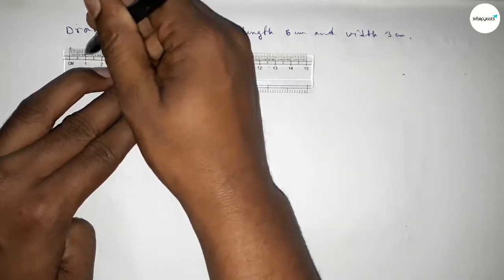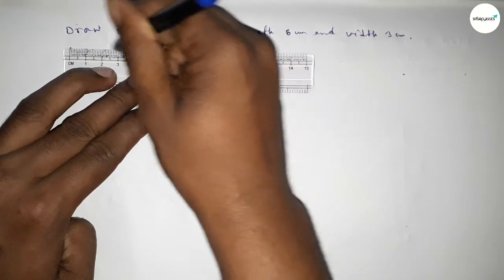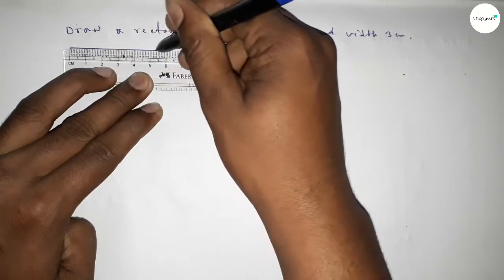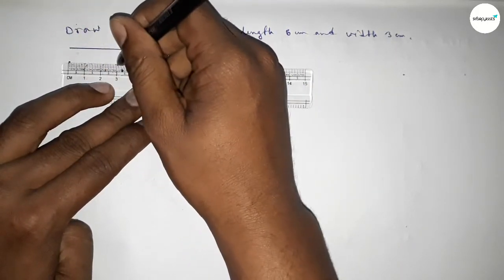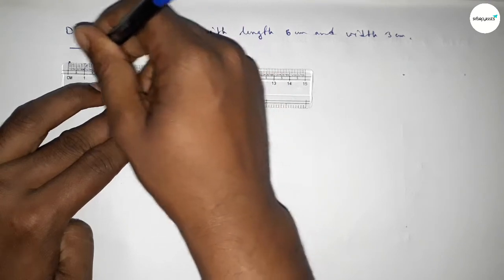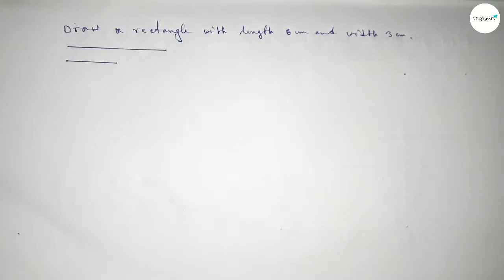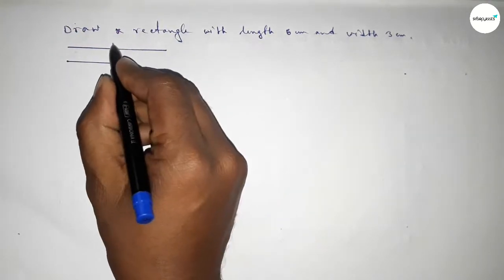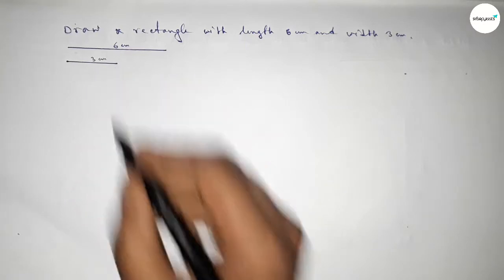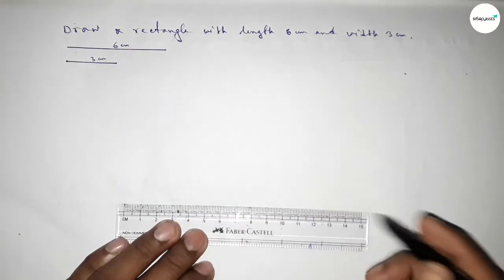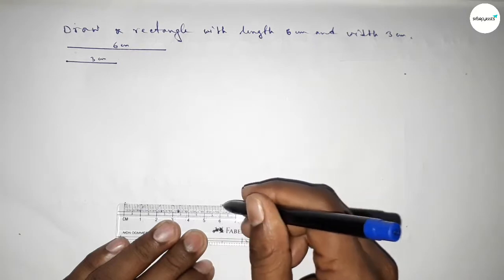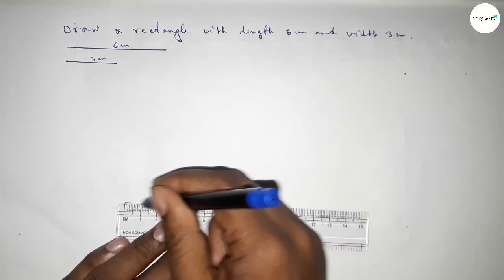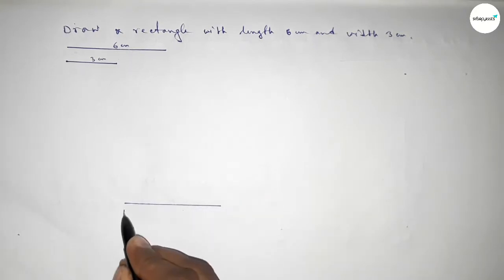First of all we have to draw the length 6 centimeter, so this is 6, and drawing another line of length 3 centimeter, so this is 3. This one is 6 centimeter and this one is 3 centimeter. Now we have to draw a line of length 6 centimeter, so drawing here a line of 6 centimeter and taking point B and point C.